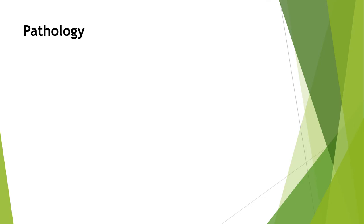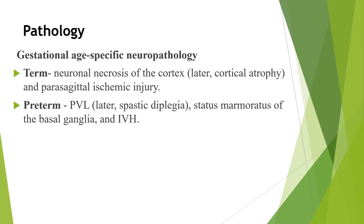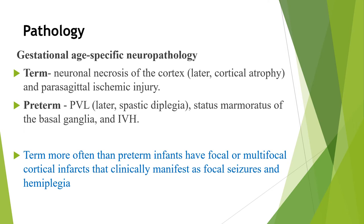When we see the pathology of hypoxic ischemic encephalopathy, the neuropathology is gestational-age specific. In term babies, HIE causes neuronal necrosis of the cortex, which may later present with cortical atrophy and parasagittal ischemic injury. In preterm babies, periventricular leukomalacia occurs, which later causes spastic diplegia, and also status marmoratus of the basal ganglia and IVH (intraventricular hemorrhage) can occur. Term infants more often than preterm infants have focal or multifocal cortical infarcts that clinically manifest as focal seizure and hemiplegia.